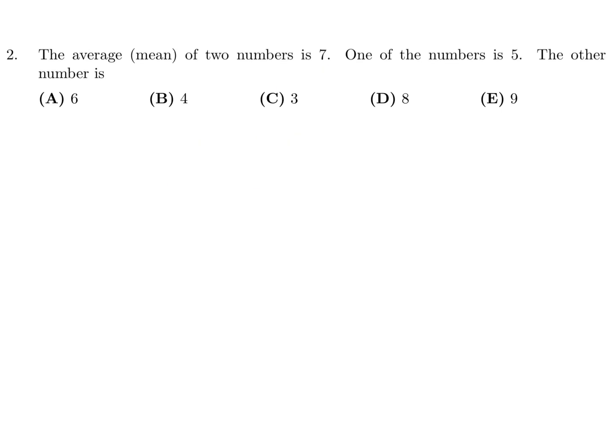The average of two numbers is 7. One of the numbers is 5. The other number is. So I'll call the other number x, and they're saying that the average of that and 5 is 7. So this is the equation. Let's solve this. 5 plus x is 14, and therefore x is equal to 9, and therefore E is the answer.